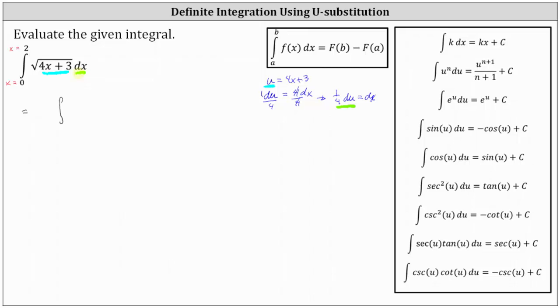Again, dx is equal to one-fourth du. Let's factor out the one-fourth, and then we have du. And the square root of the quantity 4x plus three is now the square root of u, which can be written as u to the power of one-half.